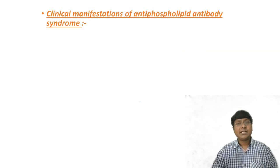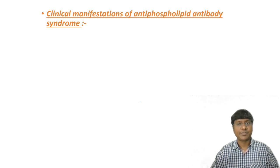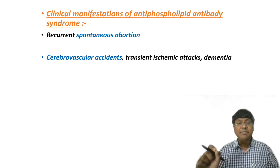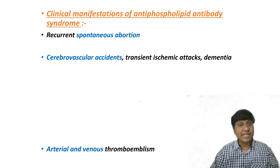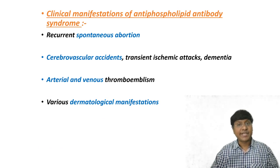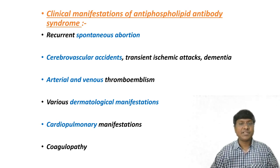The clinical manifestations of APLA syndrome are all related to the clotting process and thrombosis formation. Because of reduced blood supply to the fetus there can be recurrent spontaneous abortions. Due to clot formation within the cerebral vasculature, individuals can develop cerebrovascular accidents, transient ischemic attacks, and dementia. They can also have arterial and venous thromboembolism, various dermatological and cardiopulmonary manifestations, as well as coagulopathy.